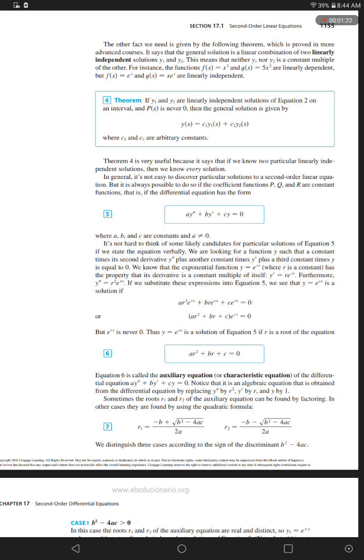Theorem 4 is very useful because it says that if we know two particularly linearly independent solutions, then we know every solution. In general, it's not easy to discover particular solutions to a second-order linear equation. It is always possible to do so if the coefficient functions, P, Q, and R, are constant functions. That is, if the differential equation has the form equation 5.